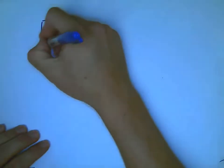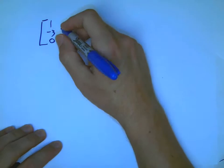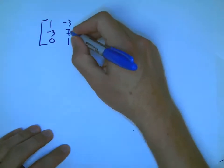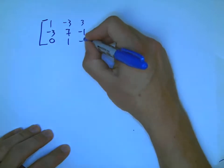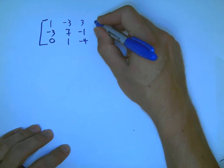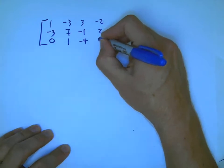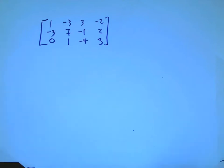Here's one more optional example on testing independence of a set of vectors. Suppose we have this set of four vectors in R3. Right off the bat, if the question is simply are these four columns independent, the answer has to be no. Any four vectors in R3 are going to be dependent.